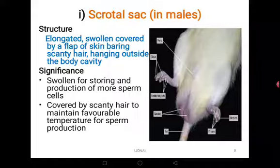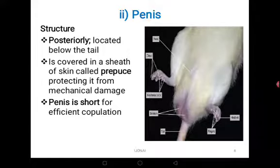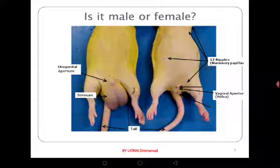There are usually two scrotal sacs corresponding to two testes. The penis can be seen when you retract the prepuce, but externally you will easily see the prepuce. The penis is posteriorly located below the tail and is covered by a sheath of skin called the prepuce, which protects it from mechanical damage. The penis is usually short, which enables it to effectively penetrate through the female vagina to deposit the sperms for fertilization.